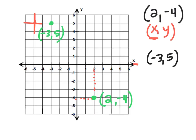Let's try zero comma negative three. Start at the origin. For the x, it says go left or right zero — so you don't move, you stay right in the middle. Then for the y, it says negative three, so go down three: down one, two, three. There's my point. That's kind of a special point — zero comma negative three. We'll learn more about that tomorrow.